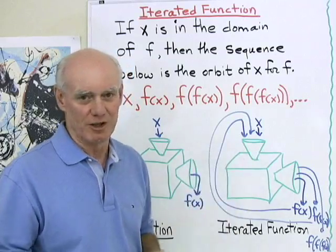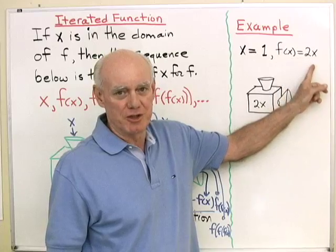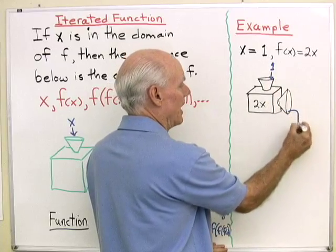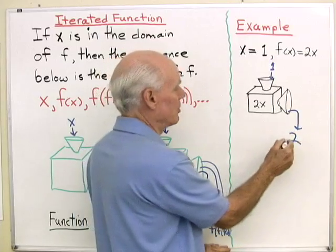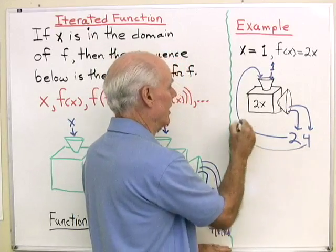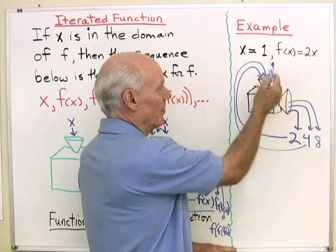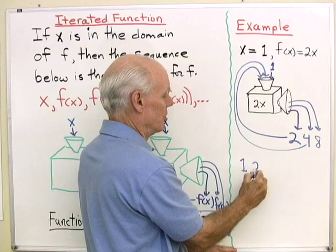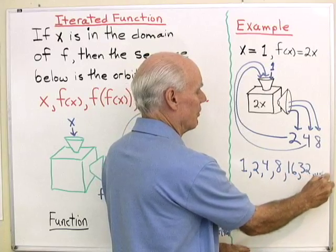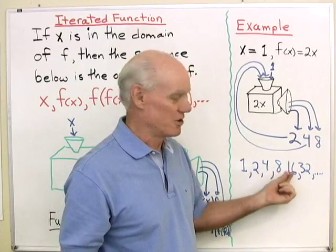Here I want to find the orbit of x equal 1 for f of x equal to 2x. I'm going to start by dropping x equal 1 into the function, and what comes out is 2 times 1, or 2. Then I'll take that value 2 and drop it back into the function, and what comes out is 2 times that, which will be 4. Then I'll take that 4 and drop it back in, and what comes out will be 2 times that, or 8. So the orbit of 1 for f of x equal 2x looks like: 1, 2, 4, 8, 16, 32, so on and so forth.